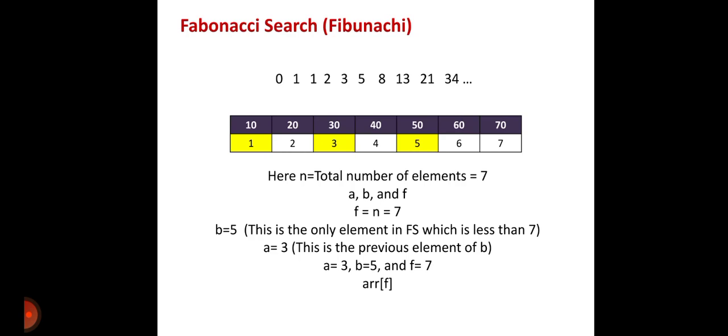Let us consider one example where the array elements are 10, 20, 30, 40, 50, 60, 70, with indices 1, 2, 3, 4, 5, 6, 7. These are the elements and their indices given in array form.